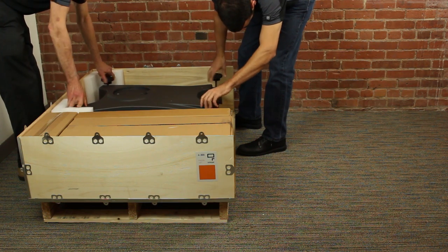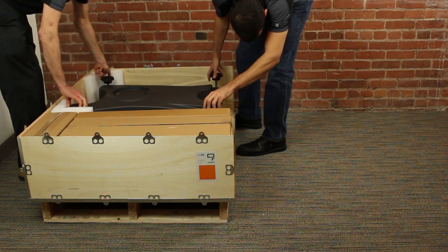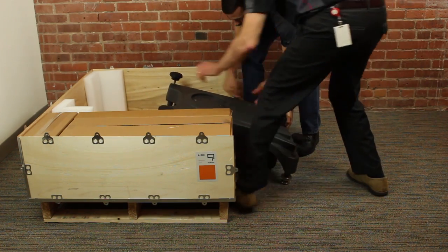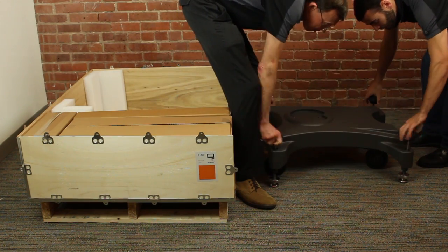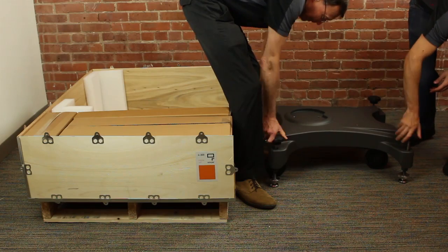To remove the base, raise the leveling feet and roll it off the pallet. It is not necessary to lift the base. Lower the leveling feet to keep the base from moving.